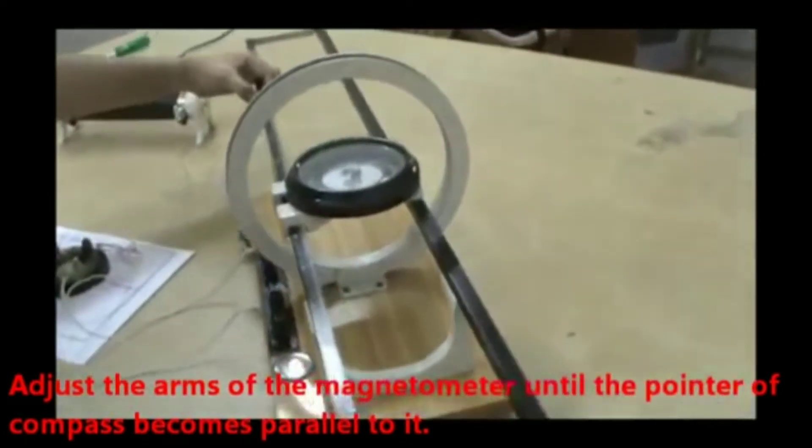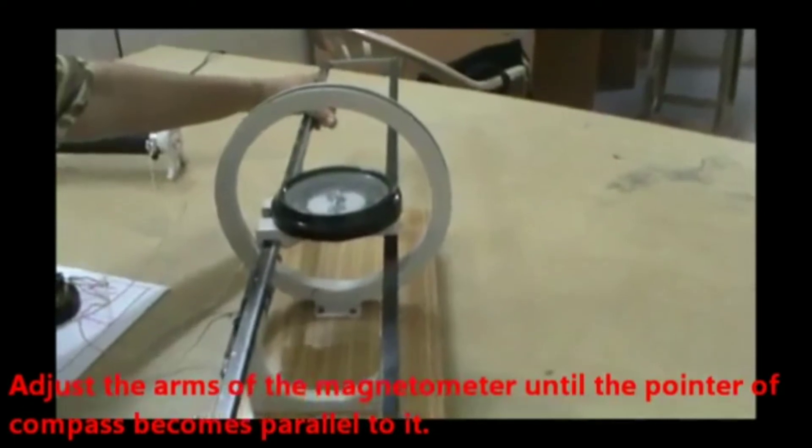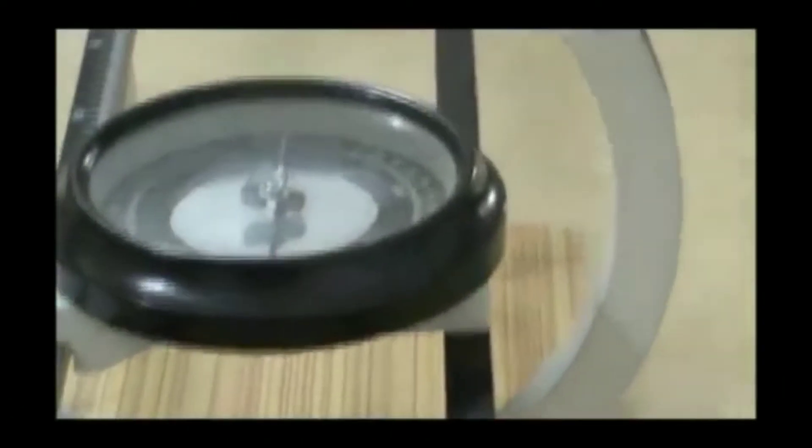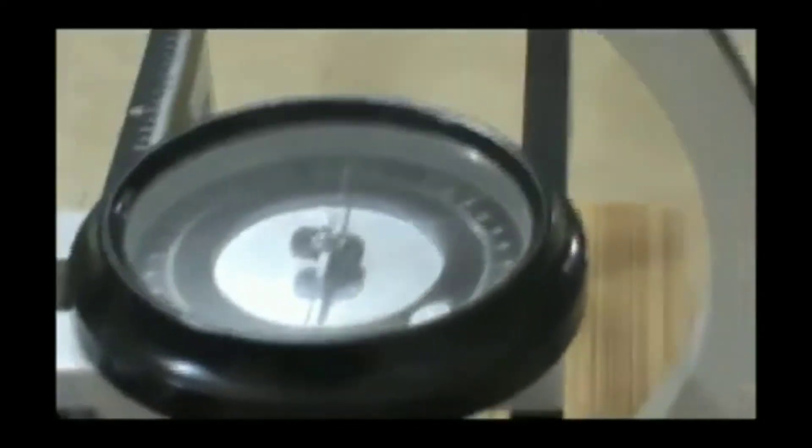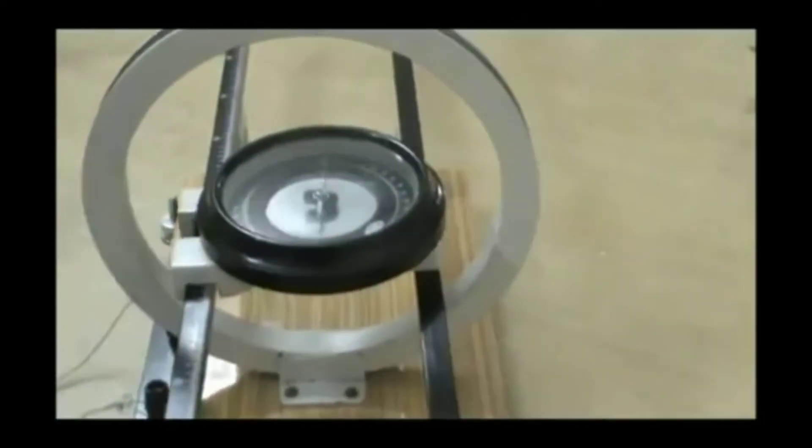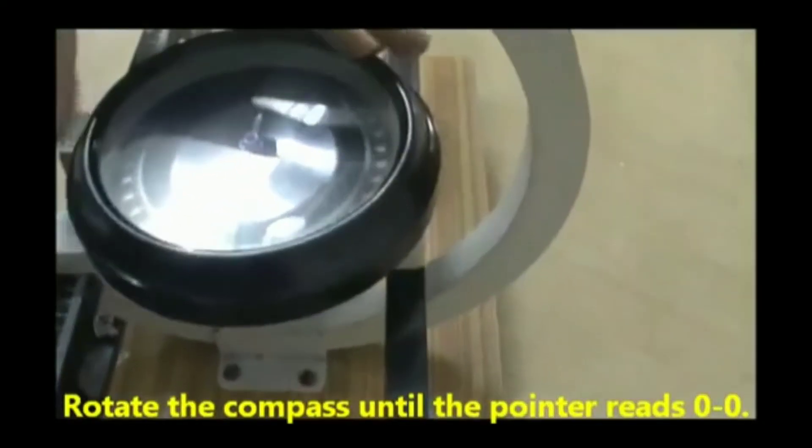Adjust the arms of the magnetometer until the pointer of the compass becomes parallel to it. Rotate the compass until the pointer reads zero zero.